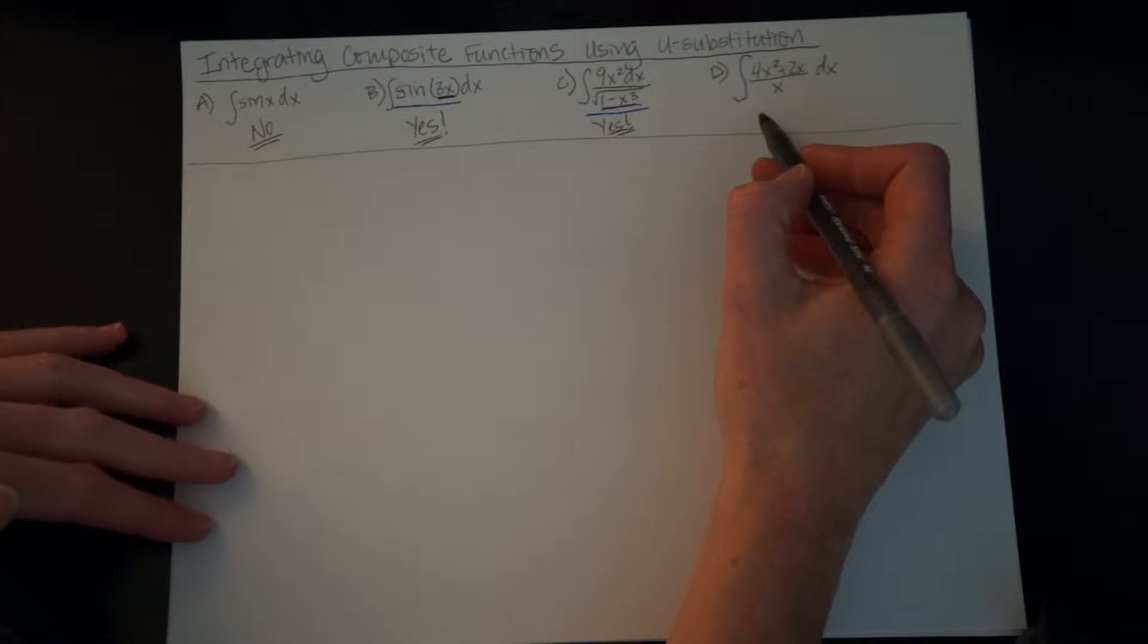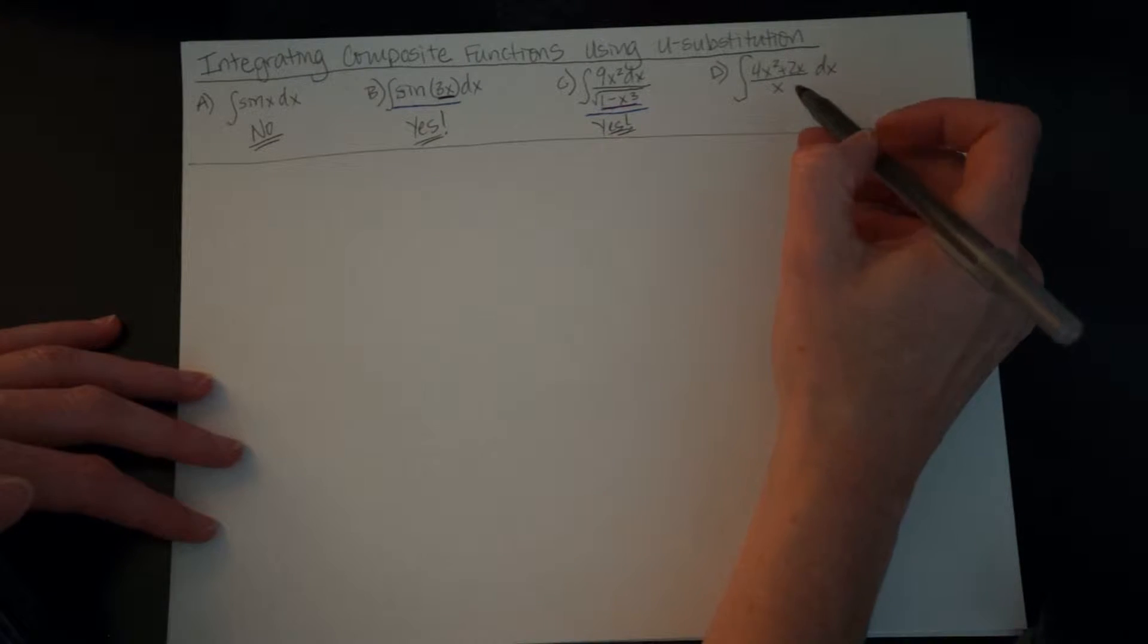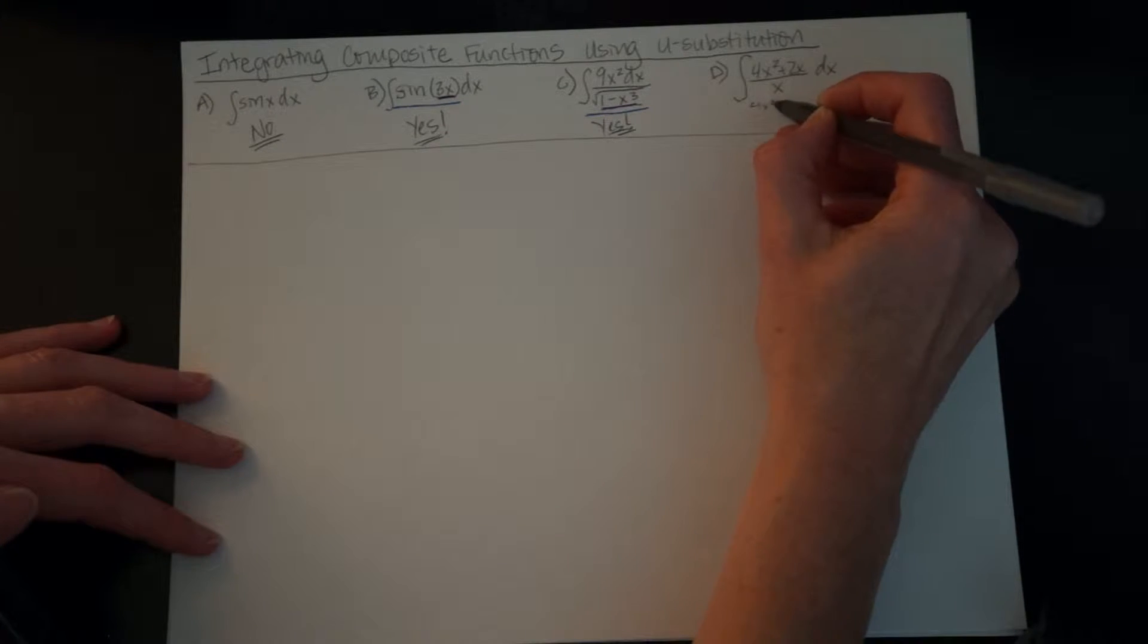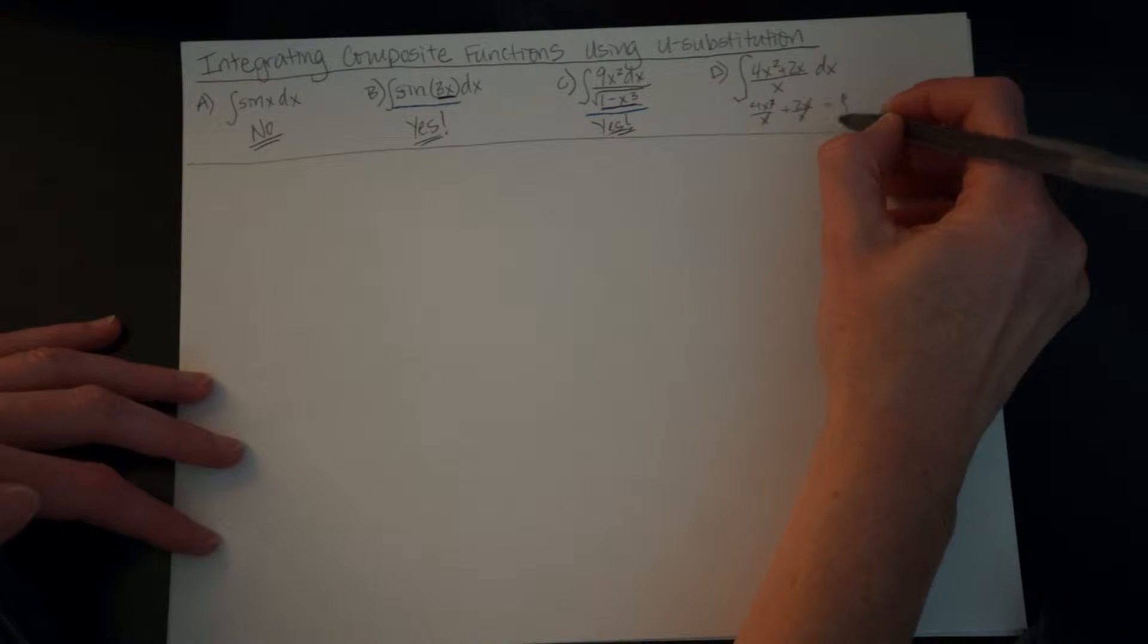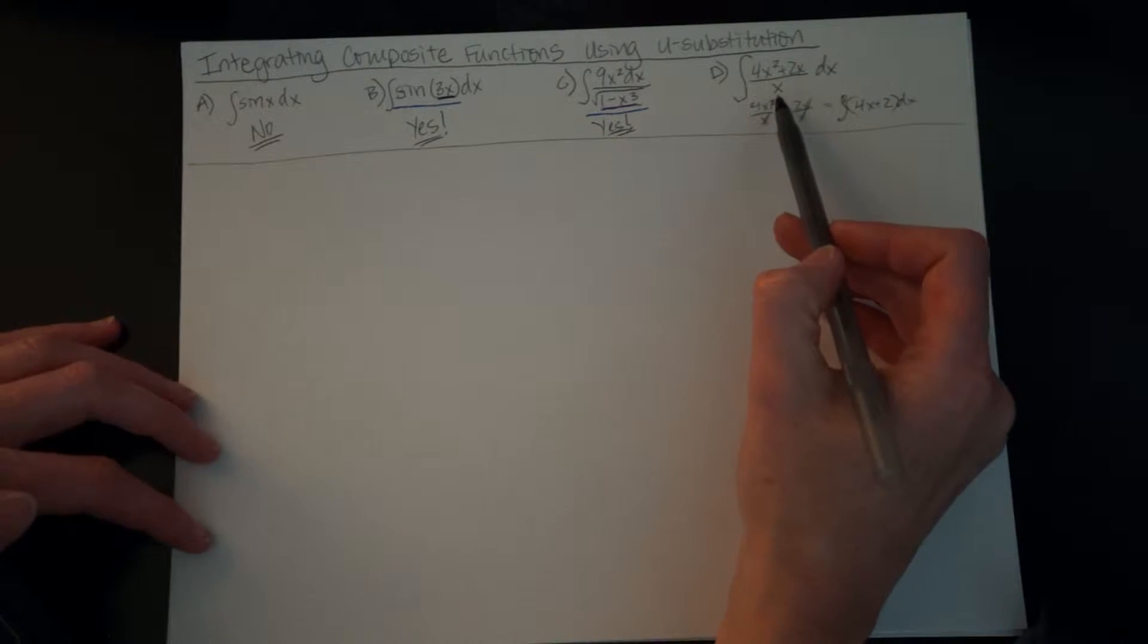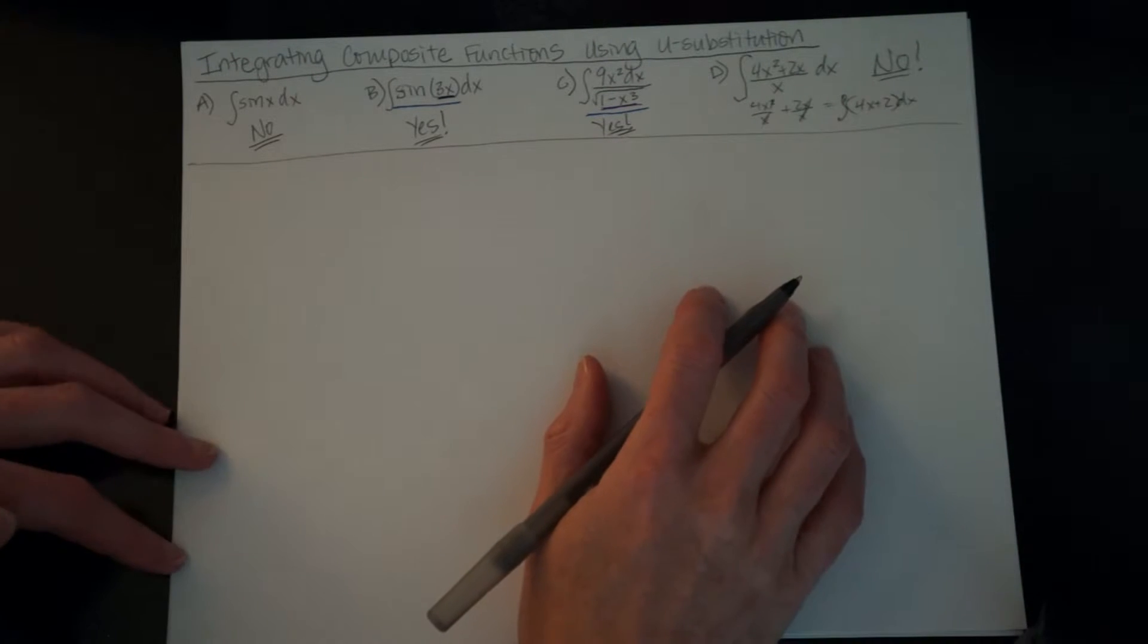This one down here, I love to give this one. My students want to smack me around when I do because this one looks like it could be a composite function because there's division. It looks a little more complicated, but watch how I separate these very quickly here. 4x² over x plus 2x over x. That simplifies, that reduces, and this becomes the integral of 4x plus 2 dx, a very simple linear problem that got more complicated with me adding a denominator here. So this one is a no.